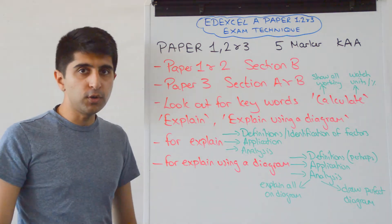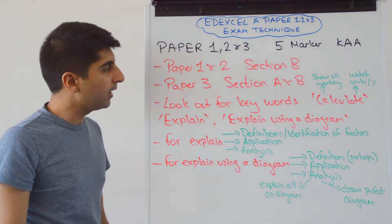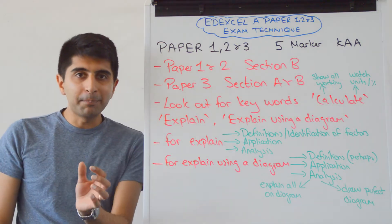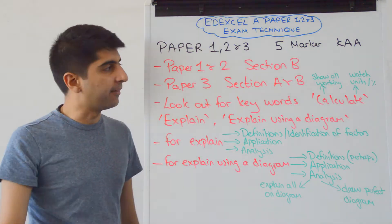In Paper 1 and Paper 2, it's going to come in Section B, most likely the very first question. In Section B will be a five-marker. In Paper 3, it's going to come both in Section A and in Section B. Most likely both sections are going to start with a five-marker there.